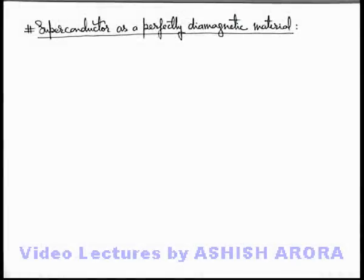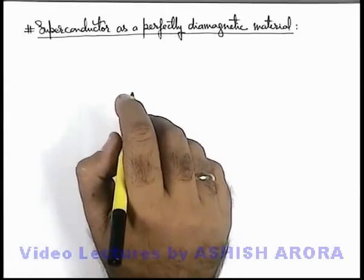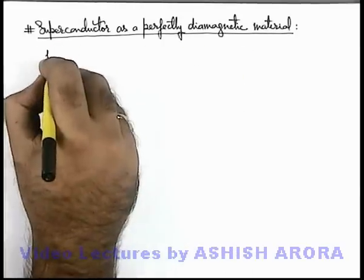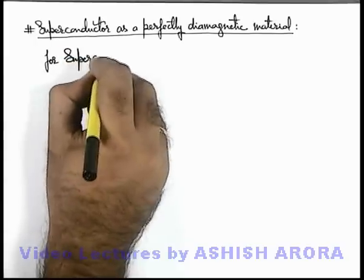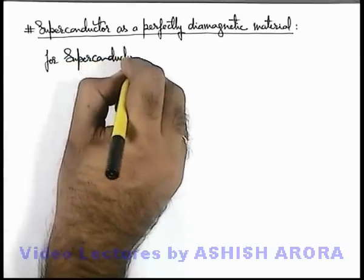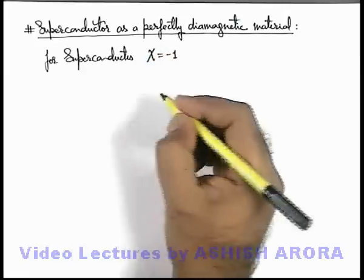Let us study an important phenomenon in material magnetization: superconductor as a perfectly diamagnetic material. You must be aware that for superconductors we use the value of susceptibility as minus one.